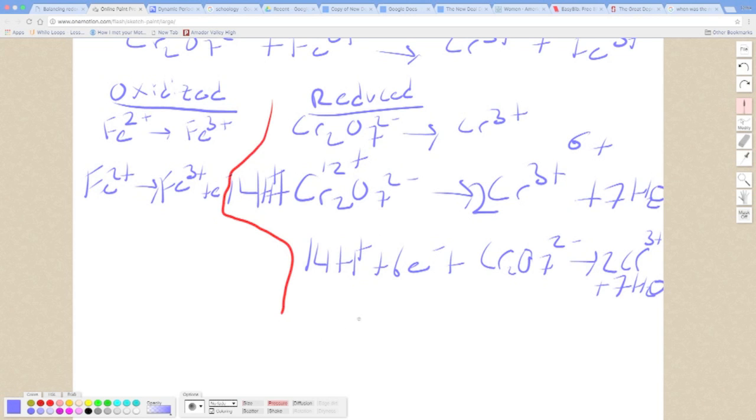So the next step in this process is to make sure that both reactions have the same number of electrons. Over here we see that we have 6 electrons, and over here we only have 1. So we want to multiply all of this by the lowest common multiple, which will be 6 in this case. So now on this side we're going to have 6 Fe2+ equals 6 Fe3+ plus 6 e-.